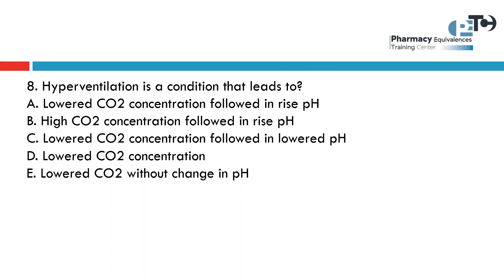Hyperventilation is a tricky question. Hyperventilation is an increase in breathing rate, so it increases the exhalation of carbon dioxide, causing the carbon dioxide level to decrease, leading to an increase in pH. The correct answer is: lowered carbon dioxide concentration followed by a rise in pH.